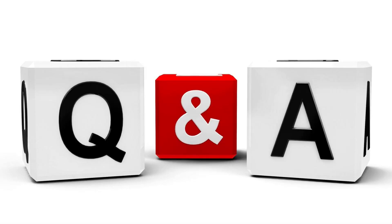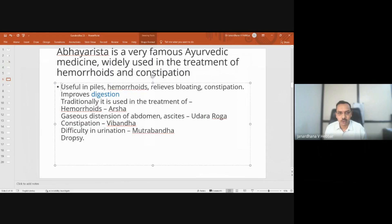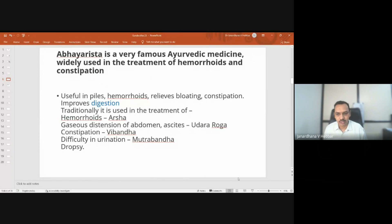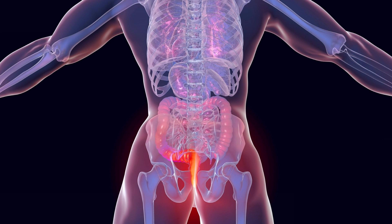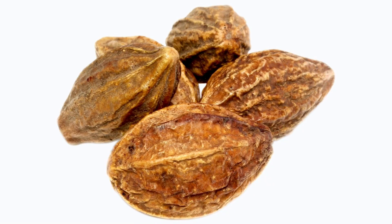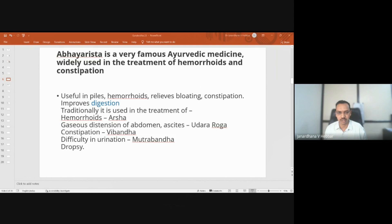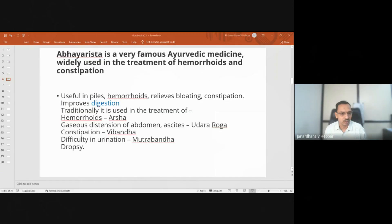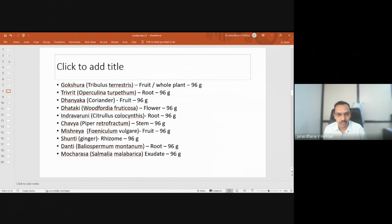This session is both question and answer type and also discussion type. Today we are going to discuss one of the most important aristas or fermented liquids, which is very commonly used — Abhyarista. It is useful in piles, hemorrhoids, bloating, and constipation. Its main ingredients include haritaki, raisins or draksha, vidanga, madhuka made into kashayam and jaggery, gokshura, trivrut, coriander, dhataki as the fermenting agent, indiravaruni, shunti or ginger, and danti.